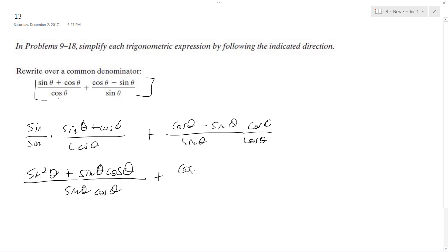Up here, I get cosine squared theta minus cosine theta sine theta. And then bottom, sine theta cosine theta.